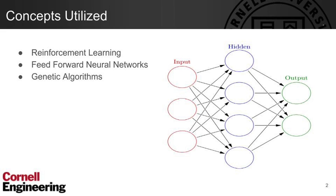Our goal in AI Practicum CS4701 was to learn how to utilize the following three concepts learned during the course of CS4700 in an applied project: the first is Reinforcement Learning, the second is Feed Forward Neural Networks, and the third is Genetic Algorithms.